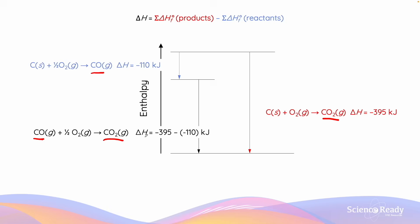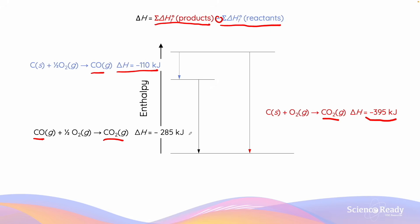As a result, delta H equals the enthalpy of the products — highlighted by this equation here — which is minus 395 kJ, minus the delta HF of the reactants, which is the negative of minus 110 kJ. That therefore gives us a value of minus 285 kJ.